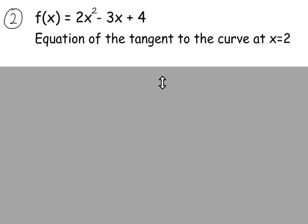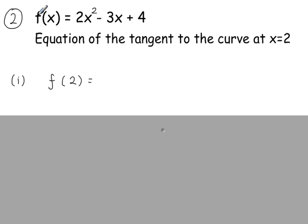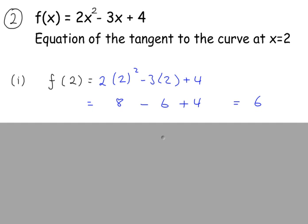Next example, using function notation this time. We have the equation of the curve and we're looking for the equation of the tangent at x equals 2. The tangent is a straight line — to write its equation we need the coordinates of one point and the gradient. To get the y-coordinate, we substitute x equals 2 into f(x): f(2) equals 2(2 squared) minus 3 times 2 plus 4, which gives 6. So the point (2, 6) is on the curve.